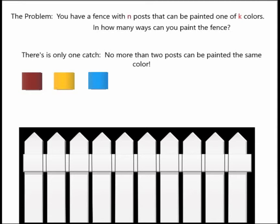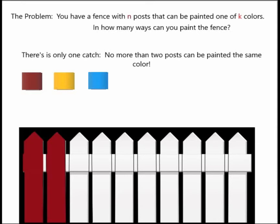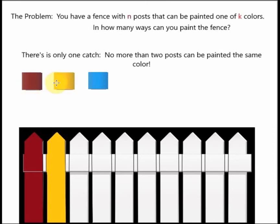Let's suppose we have three colors. That means I could paint the first post red, and I could also paint the second post red. However, the third post has to be either yellow or blue — I cannot choose red again for the third post. I could also have chosen red only for the first post and either yellow or blue for the second post. So if I chose yellow for the second post, then my third choice could be all three: red, yellow, or blue.